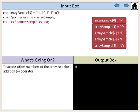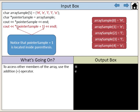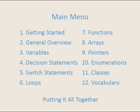To access other members of the array, use the addition operator. pointer_sample + 1 will give the same results as array_sample with subscript 0 plus 1. Notice that pointer_sample + 1 is located inside parentheses. This concludes our section on pointers.